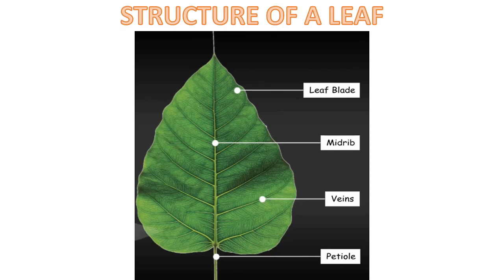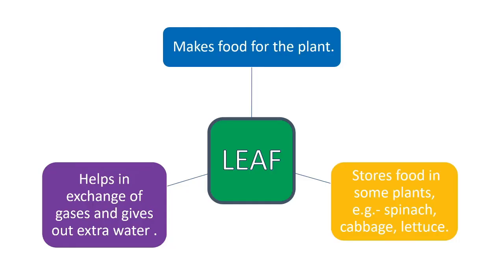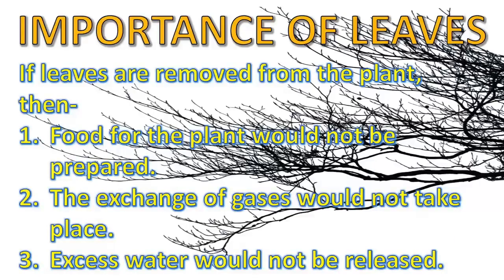Leaves are responsible for making food for the plant. They help plants in exchange of gases and release of excess water. In some plants, leaves store food also. Children, have you ever wondered what would happen to a plant if its leaves are removed? Then food for the plant would not be prepared, and the exchange of gases would not take place.